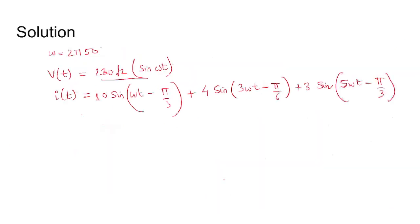Given: ω is 2π into 50, and v(t) is 230√2 sin ωt, which is harmonic-free, but the current has harmonics—fundamental, third, and fifth harmonics. So fundamental power factor equals cos(π/3) lag.